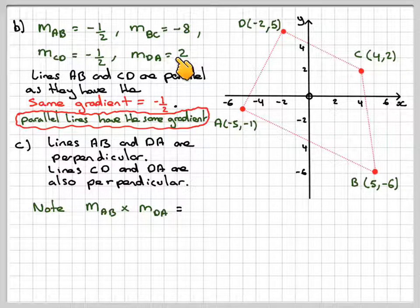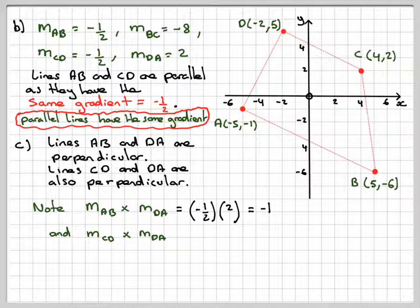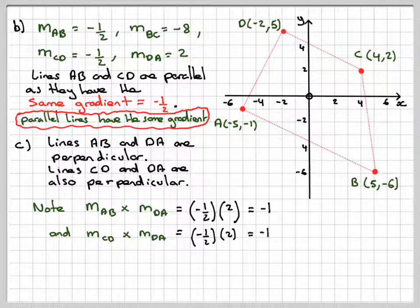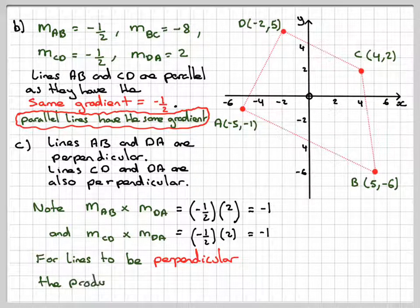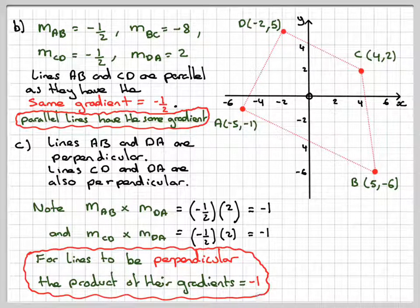So that's taking that one and that one and multiplying them together. You get -1/2 times 2, which is -1. Also, if you did the other two, m_CD and m_DA, you get -1/2 times 2, which is -1. So for two lines to be perpendicular, then what you have to show is the product, the multiplication of their gradients is equal to -1.